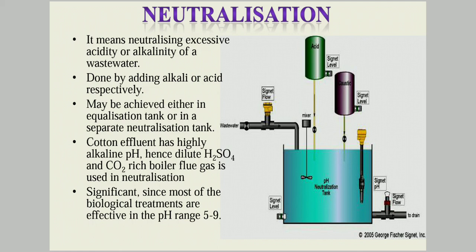Neutralization may be achieved either in the equalization tank itself or in a separate neutralization tank. As discussed earlier, cotton effluent has a highly alkaline pH, hence we use dilute sulfuric acid along with boiler flue gas, which contains high carbon dioxide, for neutralization. This process is highly significant since most biological treatment methods operate in the pH range of 5 to 9.